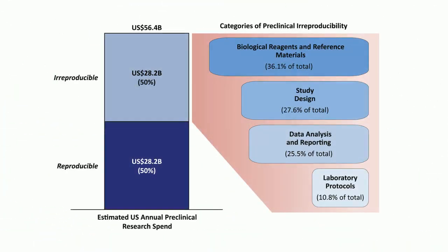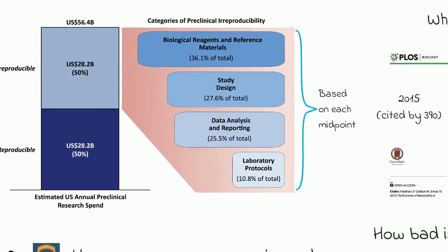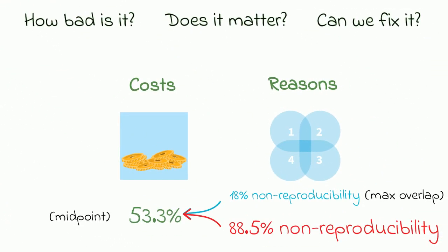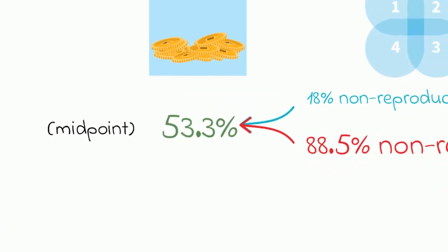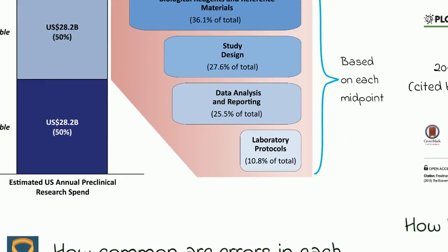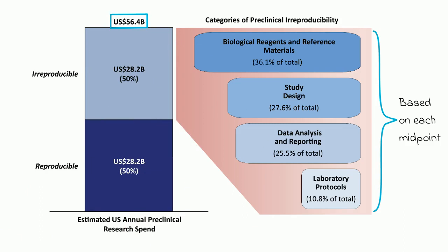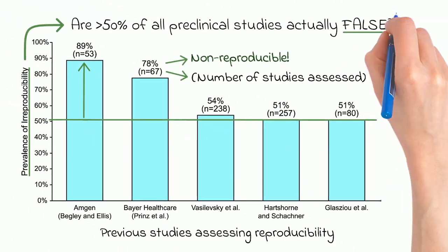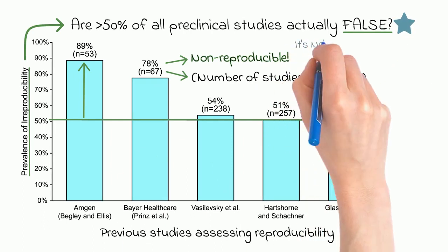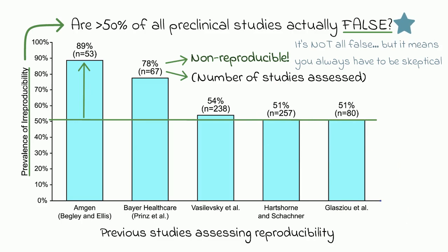At this point, they turned to the question of how much this level of irreproducibility actually affects us in terms of lost dollars. They said, let's assume conservatively around 50% of preclinical research is actually not reproducible. Using 2012 data, an estimated $56.4 billion was spent on preclinical research in the US alone. That would mean that $28.2 billion per year would actually be funding non-reproducible research. That being said, not every dollar spent on non-reproducible research is a complete waste, since the results could still have led to helpful discoveries, but it certainly suggests that the reproducibility problem is economically significant, as the authors put it.